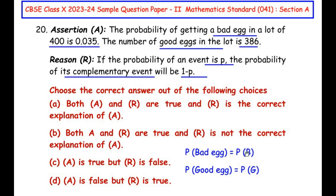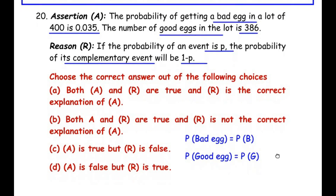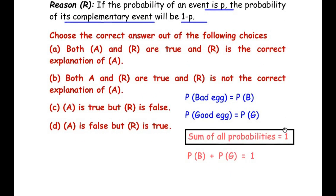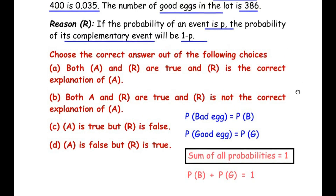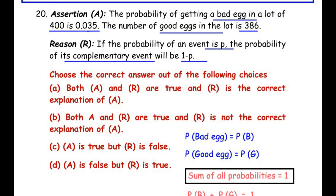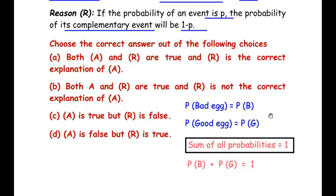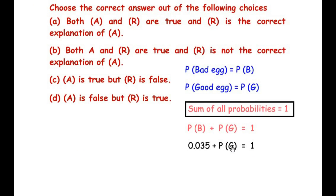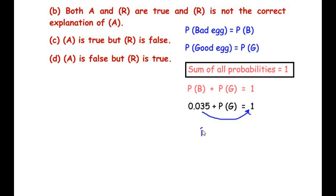We know that the sum of all probabilities should be equal to 1. So P(B) + P(G) = 1. Substituting the given value, 0.035 + P(G) = 1. Taking 0.035 to the other side, P(G) = 1 - 0.035 = 0.965. So the probability of getting a good egg is 0.965.